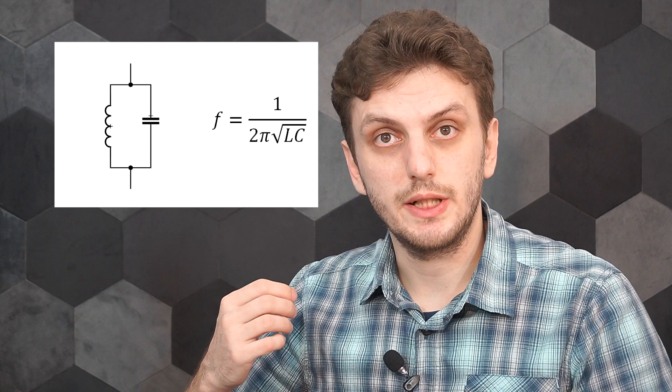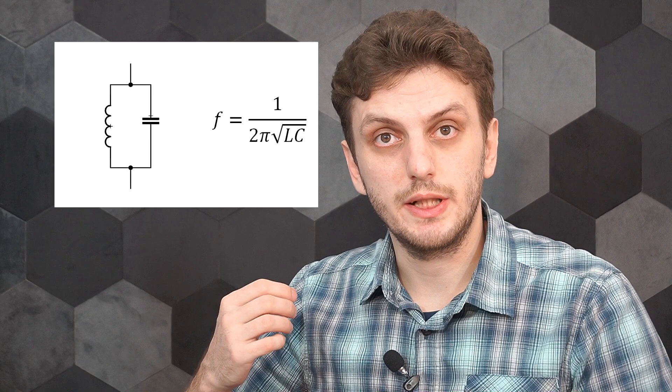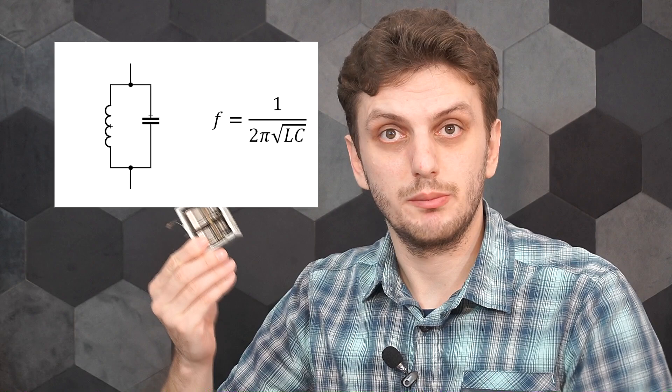Now normally if you have an LC circuit, so in an oscillator or a receiver or something, and you want to vary the resonance frequency, you can either change the capacity of the capacitor using something like a variable capacitor, or you can try to change the inductance of the inductor using something like a variometer or some other form of variable inductor.